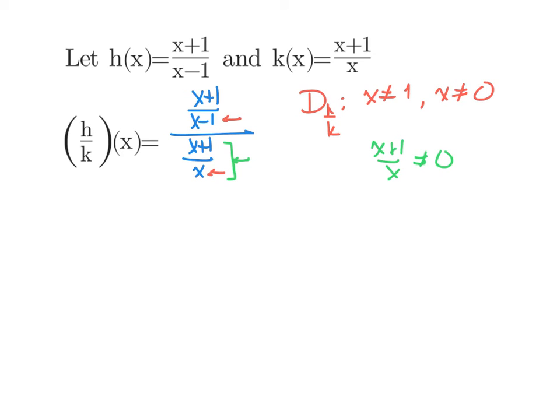So (x+1)/x can also not equal 0. The only thing that is going to make a fraction equal 0 is the numerator. And that would mean that x can't equal -1. So included in my domain of h over k are the two domains of h and k themselves plus that one extra piece that would have made k, the denominator, equal to 0.